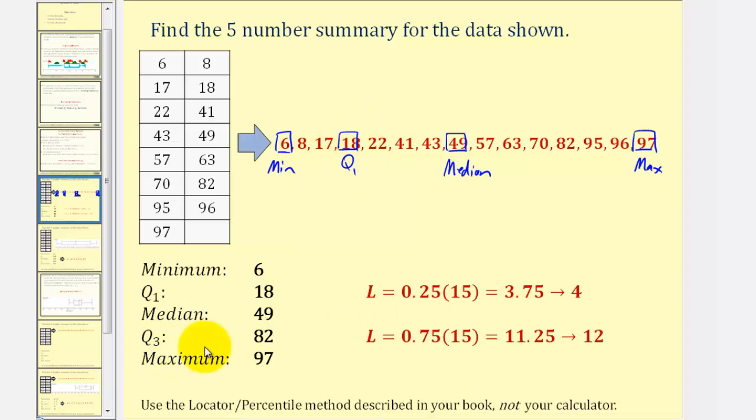And then for Q3, we find L, which is 0.75 times 15, which is 11.25, which rounds to 12. The value in the twelfth position will be Q3, which is 82. These are the five values we'll use to create our box plot.